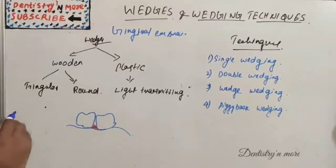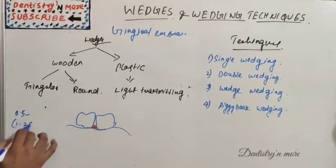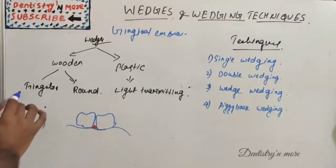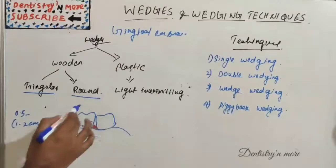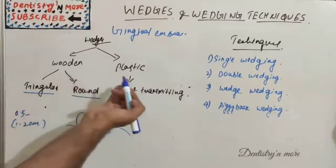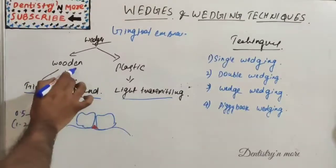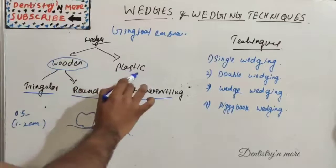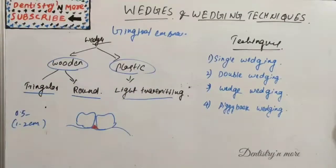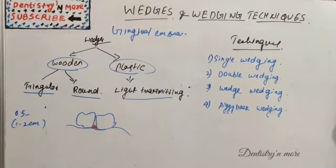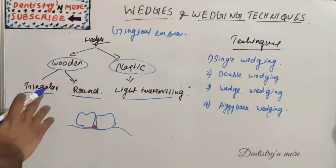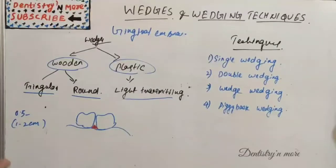Wedges are basically 0.5 inches, that is around 1 to 2 centimeters, and can be triangular in shape or round shape, and also a plastic one which is light transmitting. The triangular and round are wooden wedges, and we have one more category that is plastic wedges. Wooden wedges are very easy to trim and adjust.